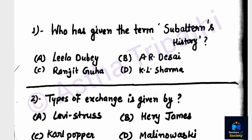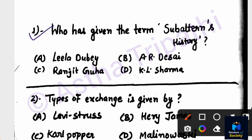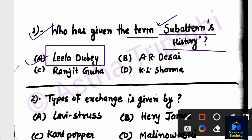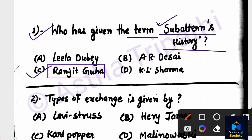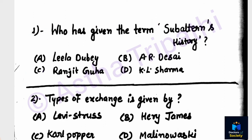Question number one: Who has given the term 'Subaltern History'? Subaltern refers to oppressed or downtrodden people. Options are: Leela Dube, A.R. Desai, Ranjit Guha, Keel Sharma. The correct answer is Ranjit Guha — option C is correct. Please note this carefully: Ranjit Guha is the correct answer for question number one.